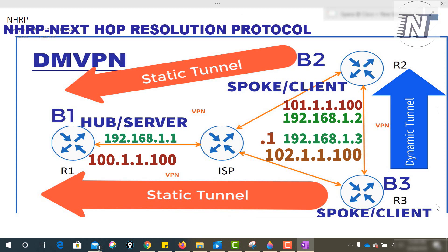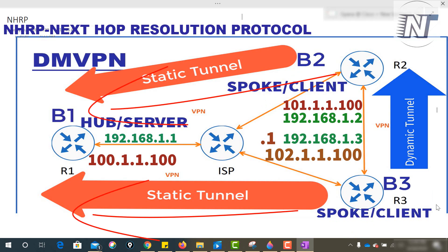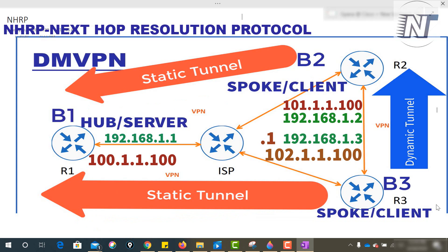Next, what will happen when we configure DMVPN? We'll configure Branch 1 as hub or server, and Branch 2 and Branch 3 as spokes. When they boot up, they will each create a permanent static tunnel with the server. When one spoke wants to communicate with another spoke, a dynamic tunnel will be created between the two spokes.